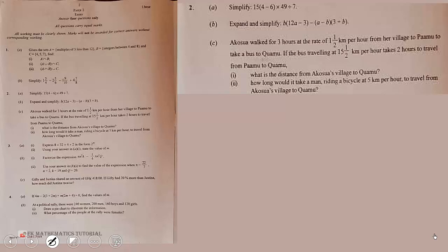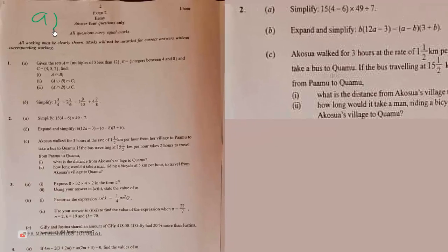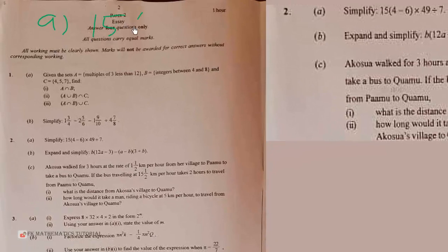Welcome. Let us continue with the BECE 2023 Mathematics Paper 2, Question Number 2. For Part A, we should simplify 15 into 4 minus 6, times 49 divided by 7.